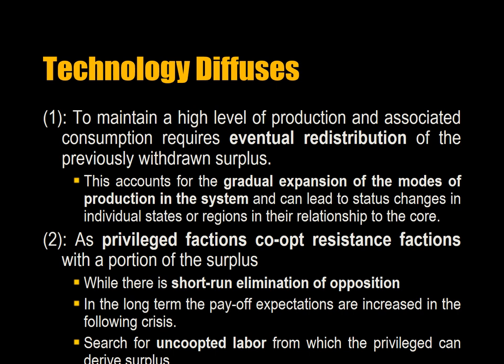The first phenomenon concludes that to maintain a high level of production and associated consumption requires eventual redistribution of the previously withdrawn surplus. This accounts for the gradual expansion of the modes of production in the system and can lead to status changes in individual states or regions in their relationship to the core. For example, the British developed factories, but then invested resources to build factories elsewhere, and so the technology spread.